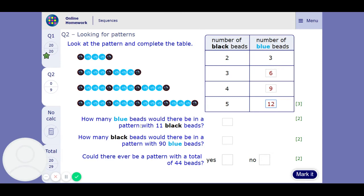How many blue beads would there be for a pattern with 11 black beads? Well I could draw it out but that seems like a lot of work. So let's have a look at a pattern. The pattern is going to be that we are adding 3 blue beads for each black bead we add.